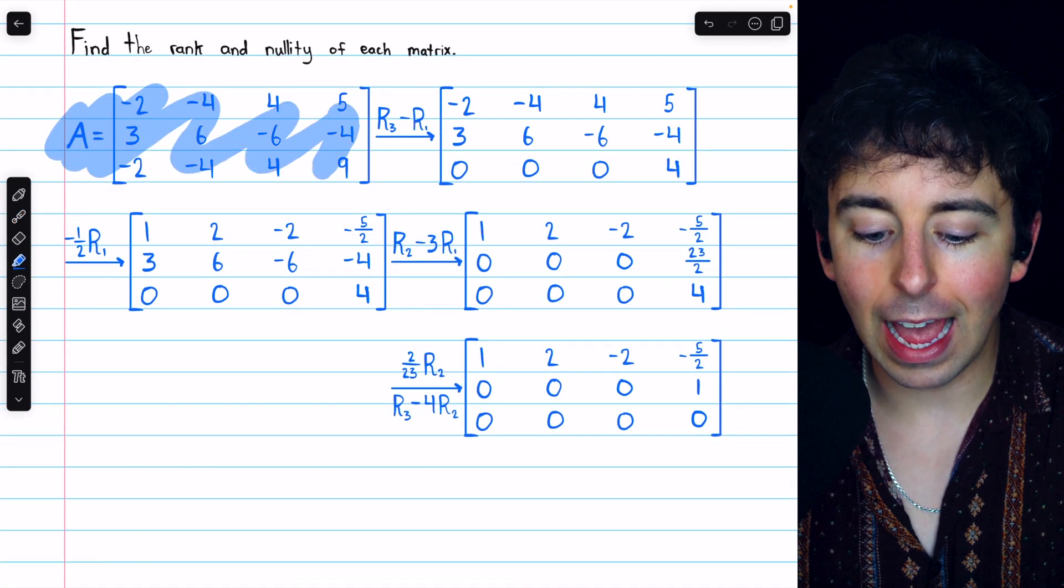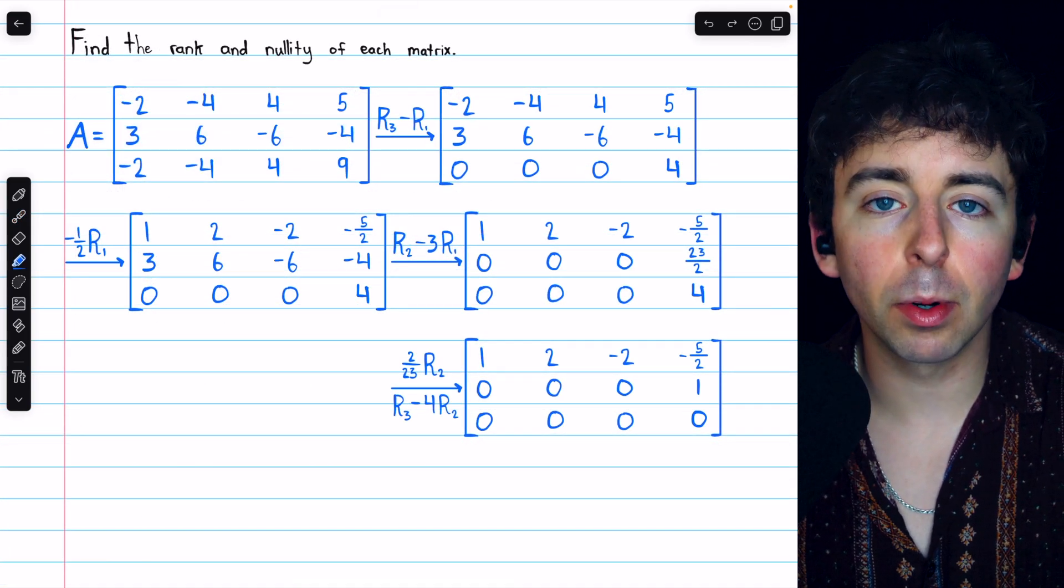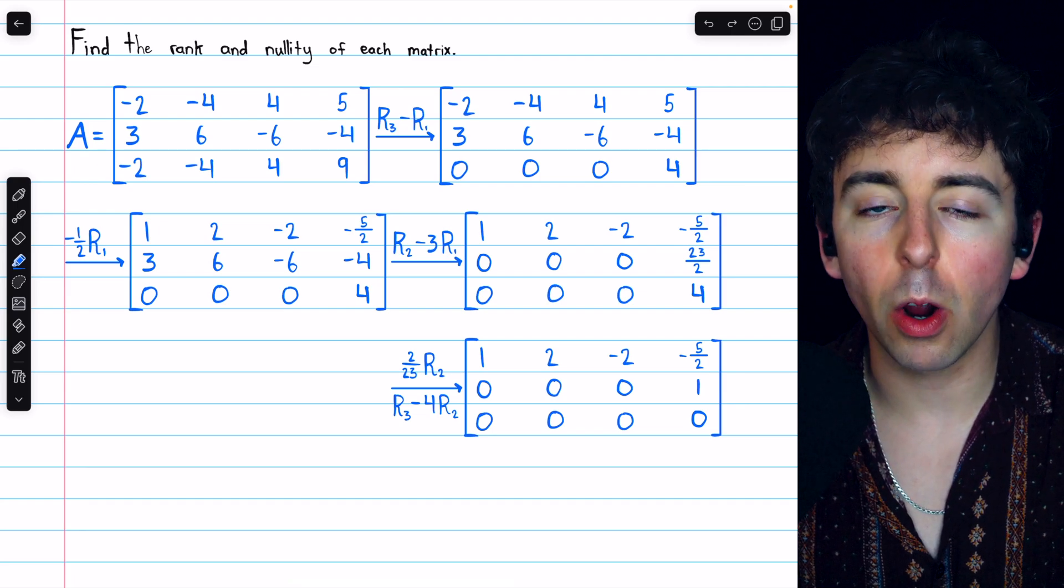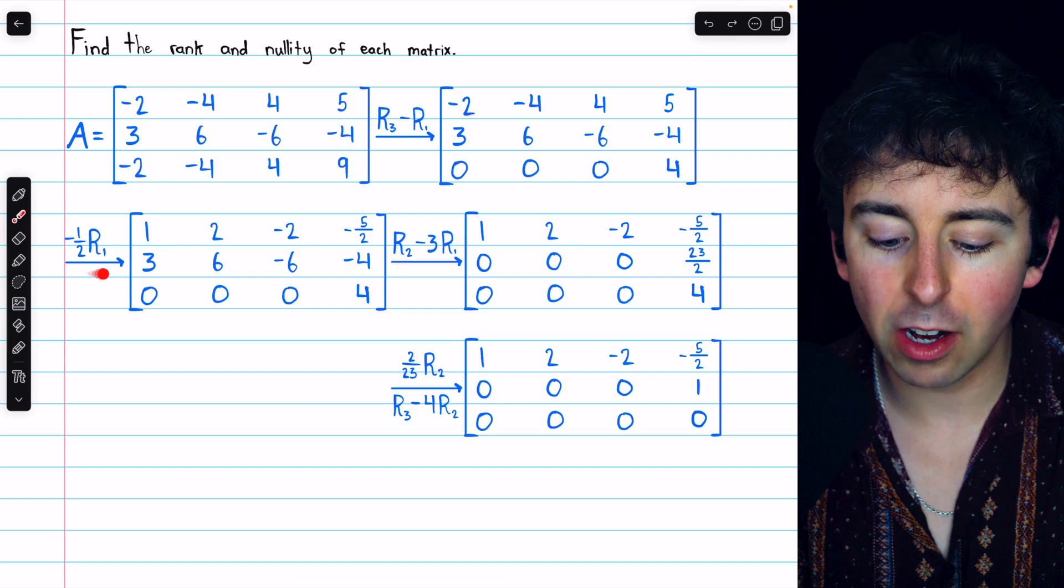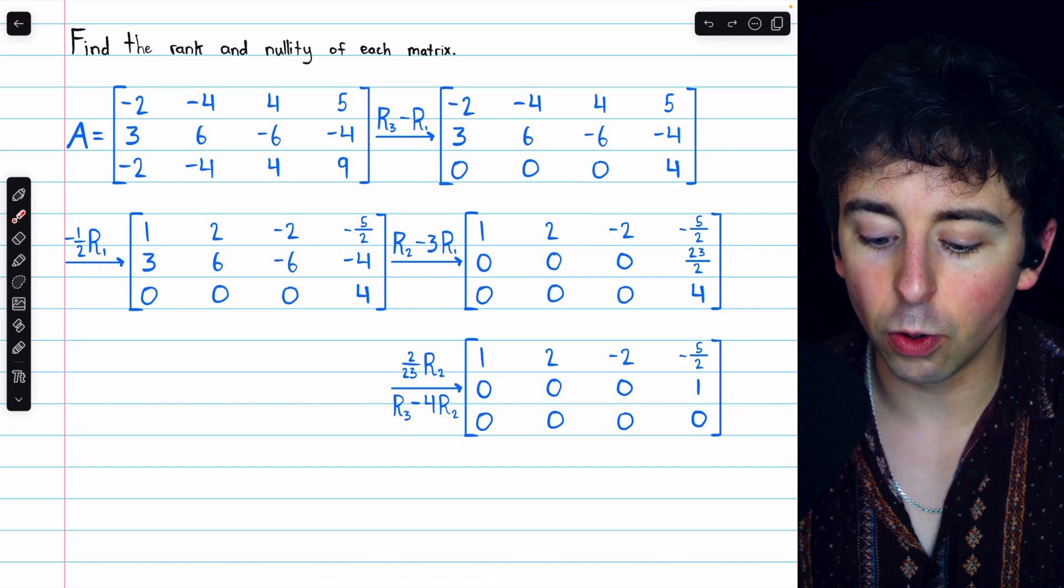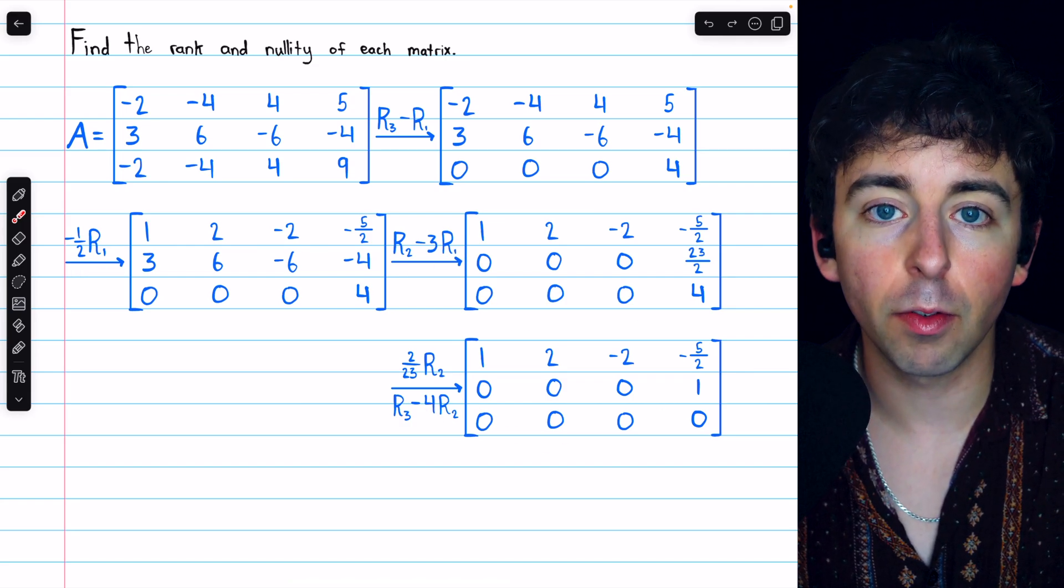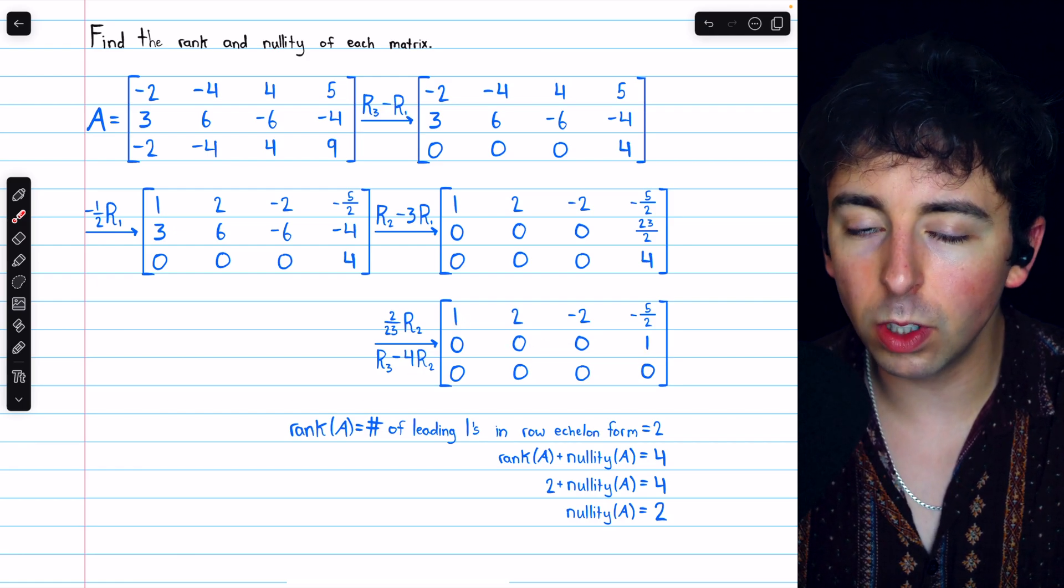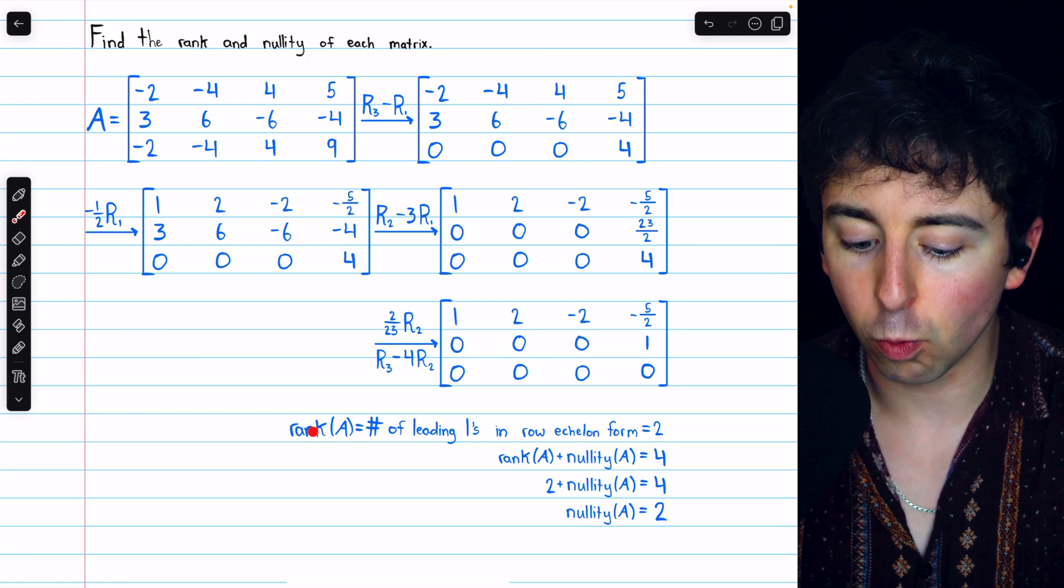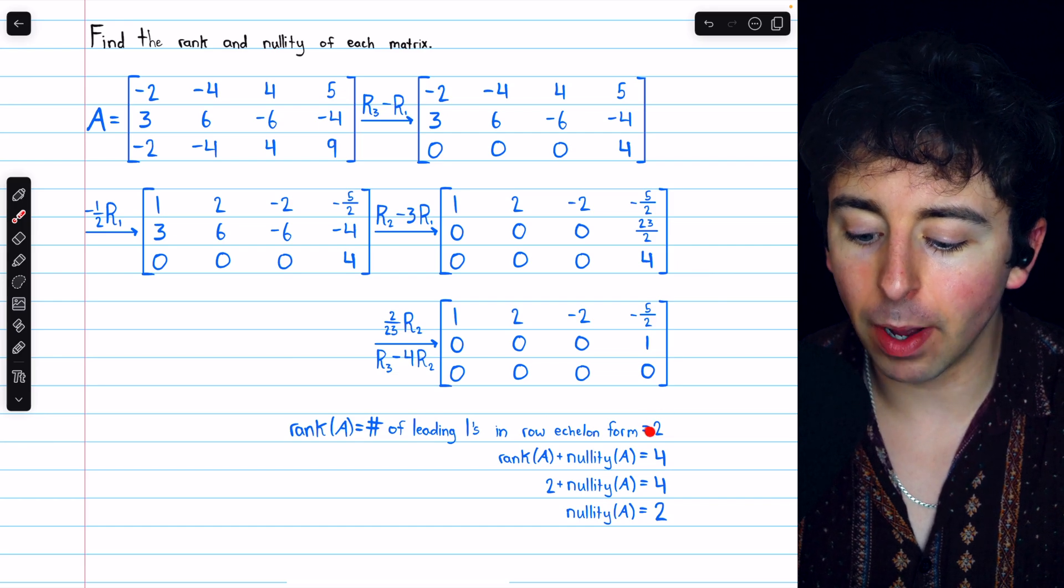Beginning with matrix A, its rank is the number of leading ones in its row echelon form, so we perform Gaussian elimination in order to get it into this row echelon form. In row echelon form, we see that there are two leading ones, hence the rank of our matrix A must be 2.